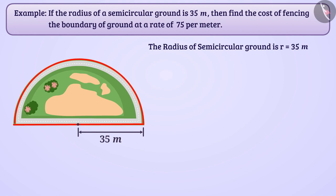By looking at the figure, we can say that to find the perimeter of this ground, we have to add the circumference and length of the diameter of the semicircle.